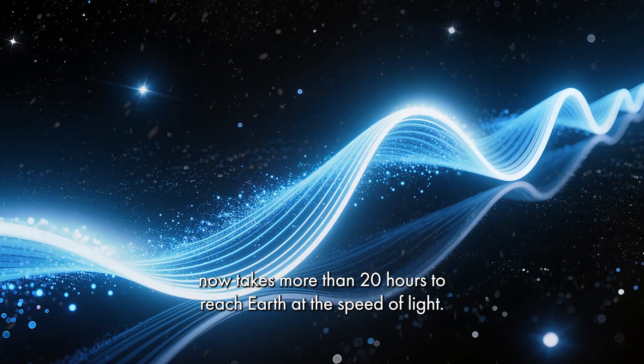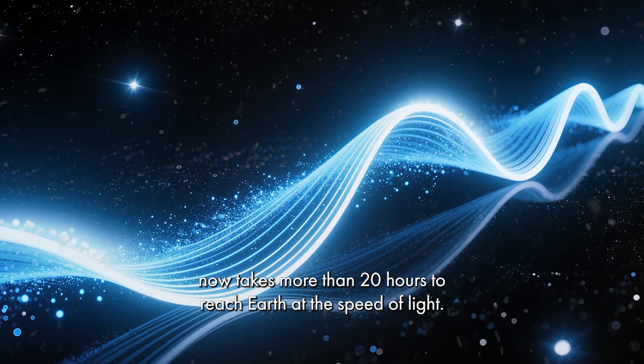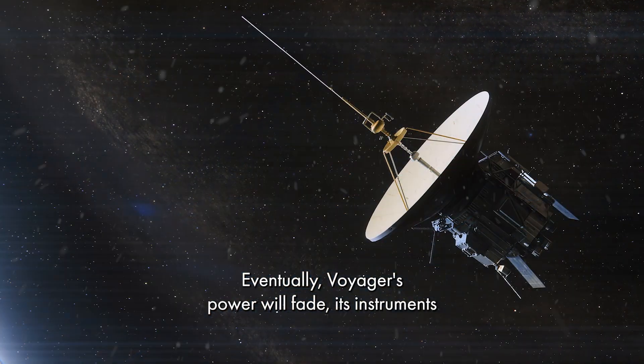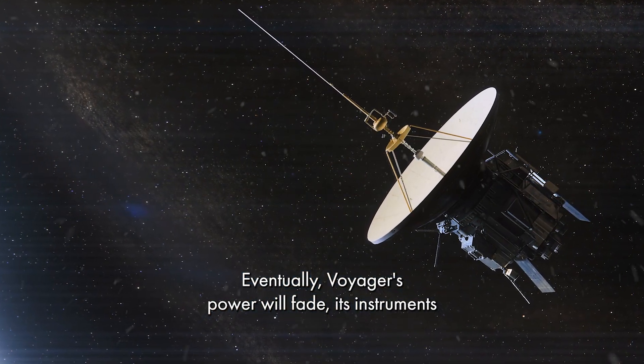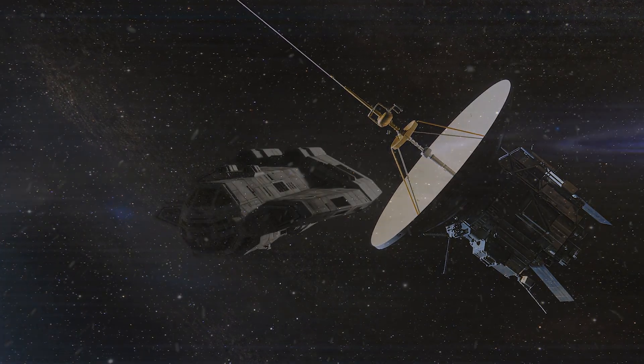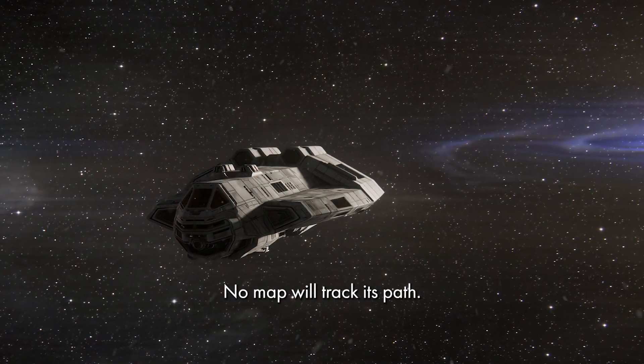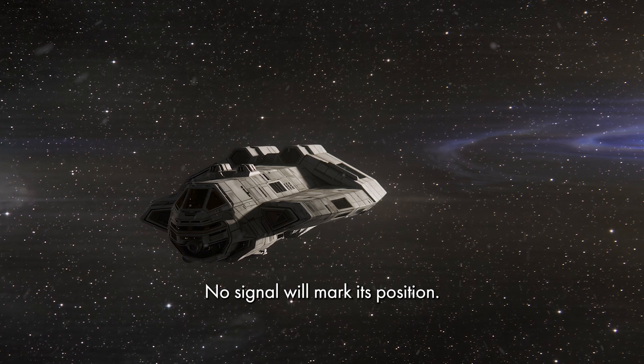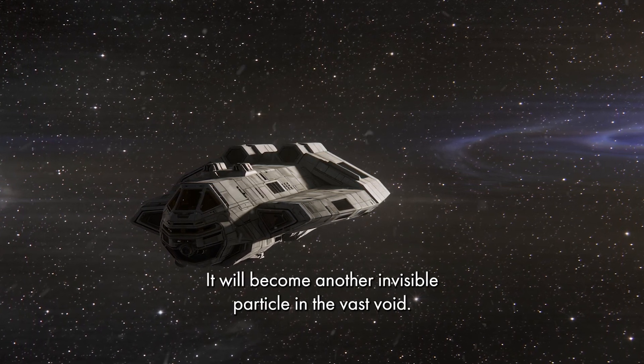Communication from Voyager now takes more than 20 hours to reach Earth at the speed of light. Eventually, Voyager's power will fade, its instruments will fall silent, and it will drift unnoticed through the galaxy. No map will track its path. No signal will mark its position. It will become another invisible particle in the vast void.